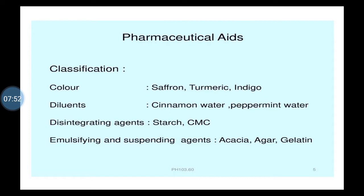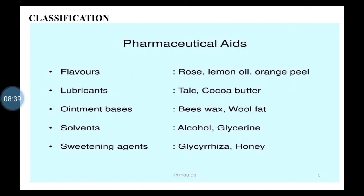In emulsions, both phases are there — oil and water. Oil and water cannot be mixed as you know, so the emulsifying agent plays a role to make a homogeneous preparation. Then suspending agent — whatever solid substances are there which have less solubility in the vehicle, the suspending agents are used to improve the solubility in formulations.